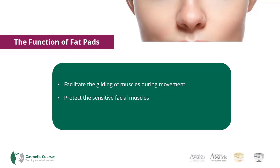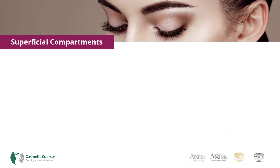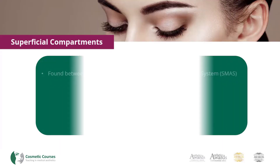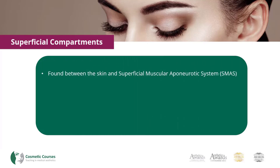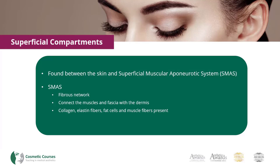The facial fat pads can be divided into superficial and deep compartments. The superficial compartments are found between the skin and the superficial muscular aponeurotic system, or SMAS. The SMAS is a fibrous network connecting the muscles and fascia with the dermis. It is made up of collagen, elastin fibres, fat cells and muscle fibres. The superficial fat compartments are found within this network.